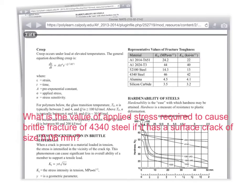This is the question we're going to solve here. Looking at the value of applied stress required to cause brittle fracture in 4340 steel if it has a surface crack of size 0.06 millimeters. So here's the 4340 steel. Let's go ahead and jot down this number, 46 megapascals root meter.